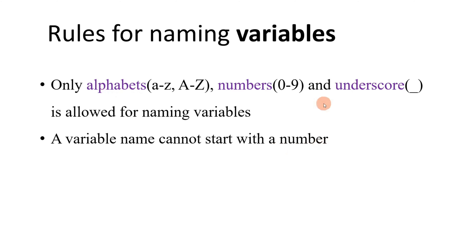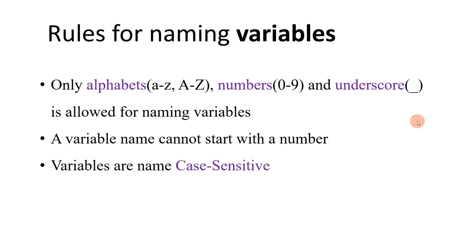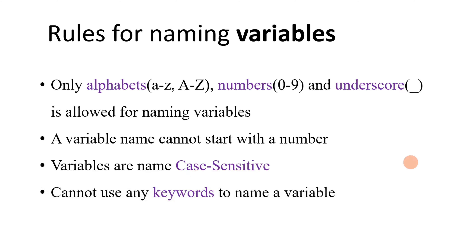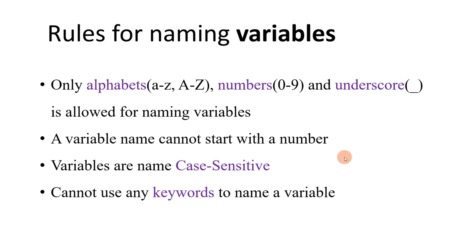The third rule is that variable names are case sensitive, so be careful when you use uppercase and lowercase characters. The fourth rule is you cannot use keywords to name a variable. Keywords are reserved words — they convey a special meaning to the Python language interpreter, so they are reserved and you cannot use any keyword to name your variable. We will understand more about keywords in a coming video. These are the rules you have to follow when naming your variables.